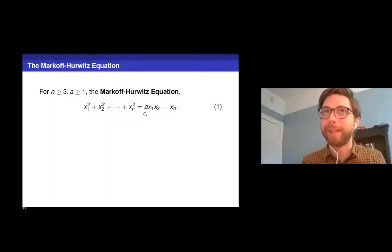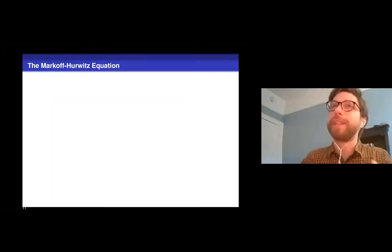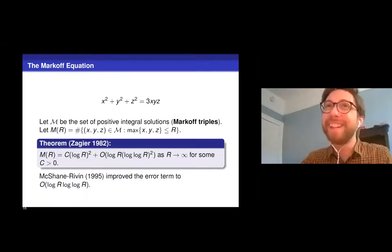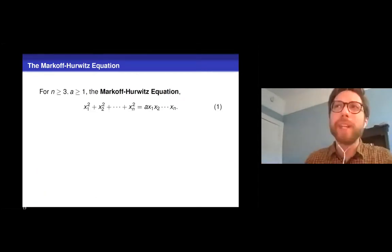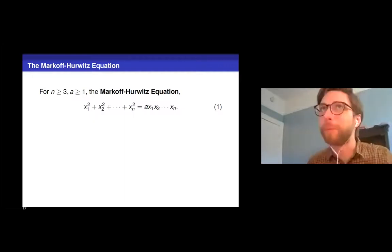So that's the equation I'm going to be talking about today. This is the so-called Markoff-Hurwitz equation. For n ≥ 3, a ≥ 1, the Markoff-Hurwitz Equation: x₁² + x₂² + ... + xₙ² = a·x₁·x₂·...·xₙ. So a here is some constant. If you want to make the analogy back to the Markoff equation, you might say, okay, maybe a should be n.